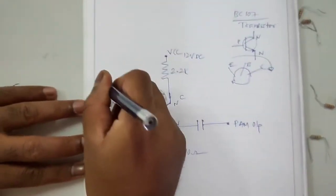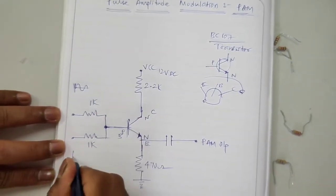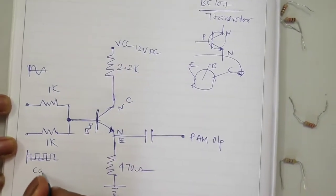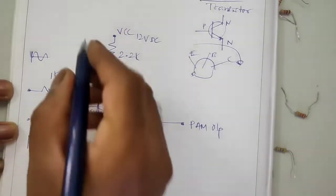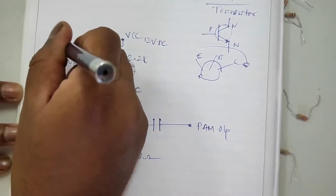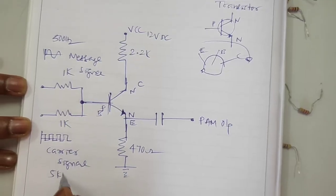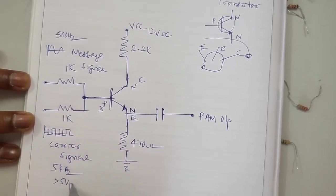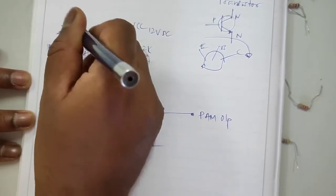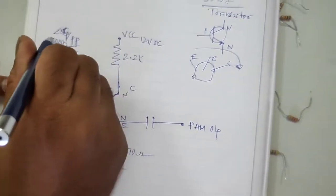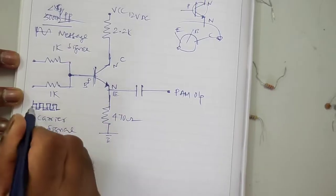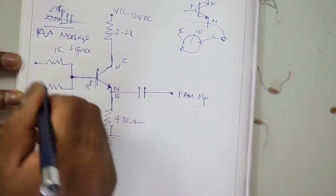Here the message signal is a sine wave, and the carrier signal is a train of pulses or you can apply a square wave. The frequency of the message signal should be around 500 Hz, and the carrier frequency should be 5 kHz. The amplitude of the carrier should be greater than 5V peak-to-peak, while the message signal should be less than 5V peak-to-peak. There are two 1K Ohm resistors.